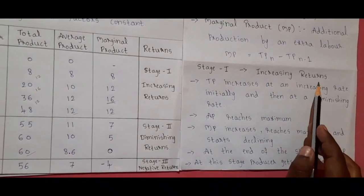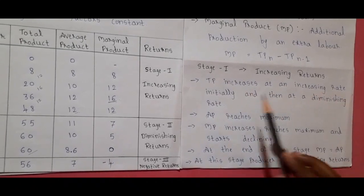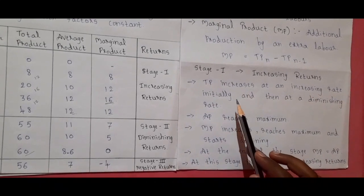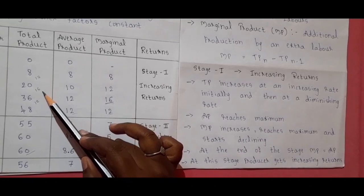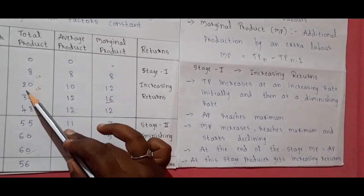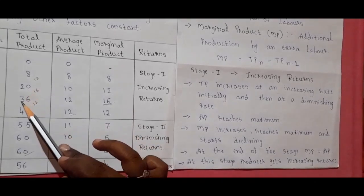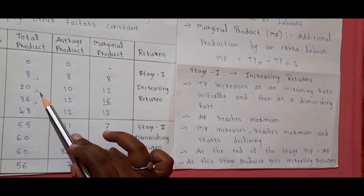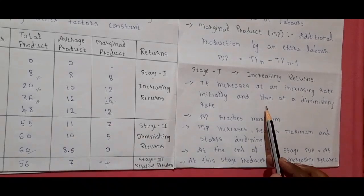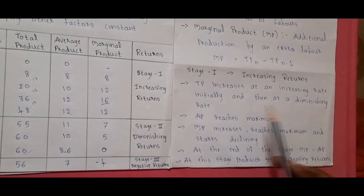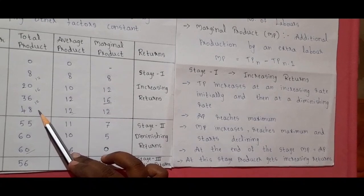In stage 1, increasing returns: total product increases at an increasing rate initially. Starting from the beginning, total product keeps increasing — from 8 units to 20 units, that is 12 units increase. Then from 20 to 36, that is 16 units increase. Then it increases at a diminishing rate.